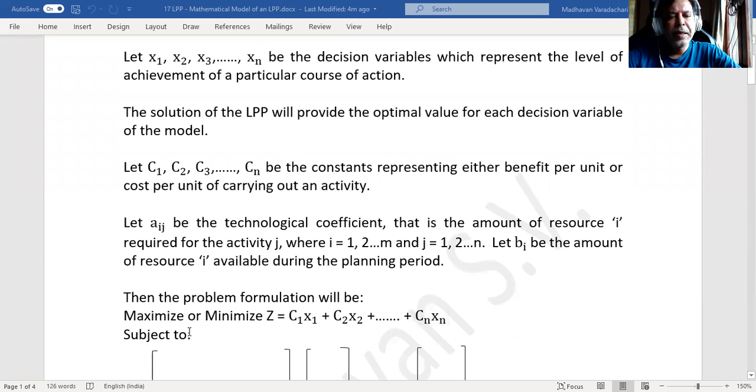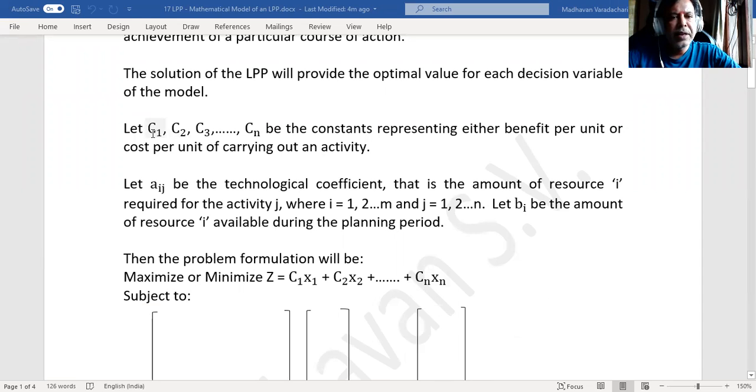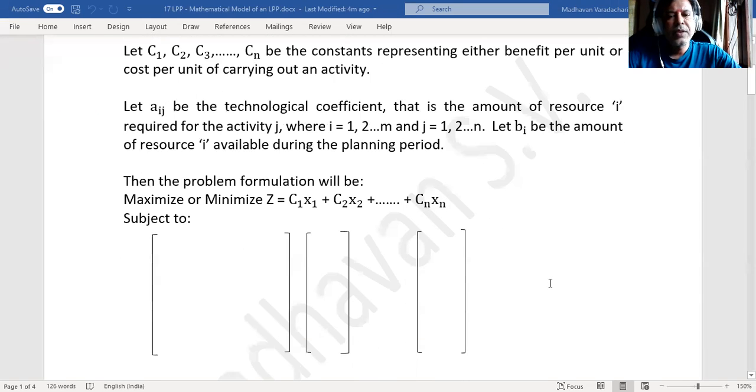Then the problem formulation will be either to maximize or to minimize. Depending on if it is related to benefit, then it is maximized. If it is related to cost, then it is minimized. The objective function is c1x1 plus c2x2 plus and so on up to cnxn, subject to the technological coefficients inside the matrix.